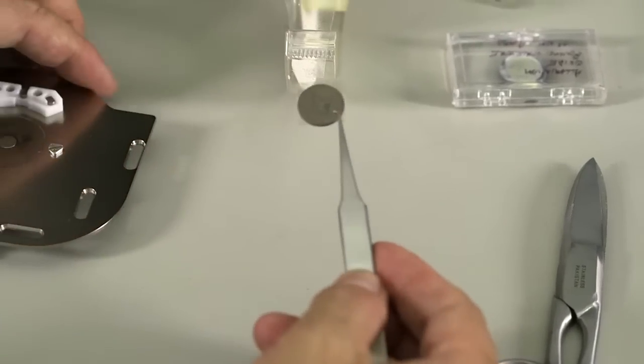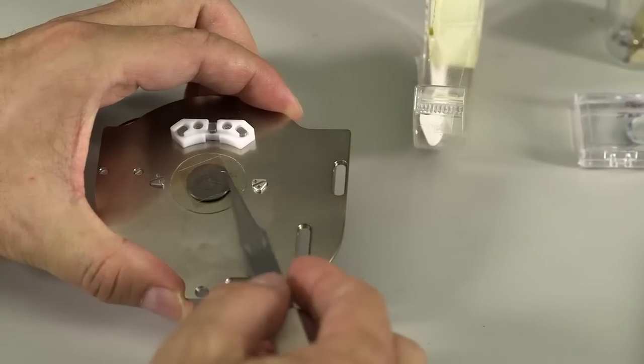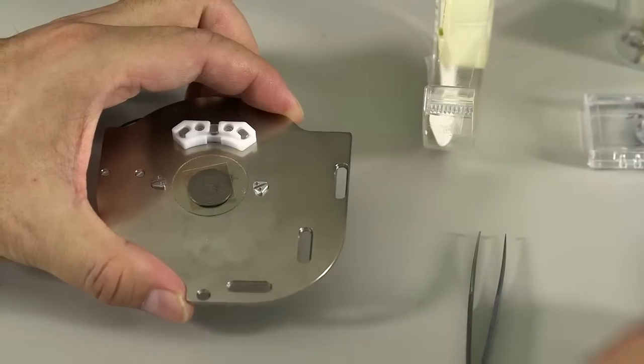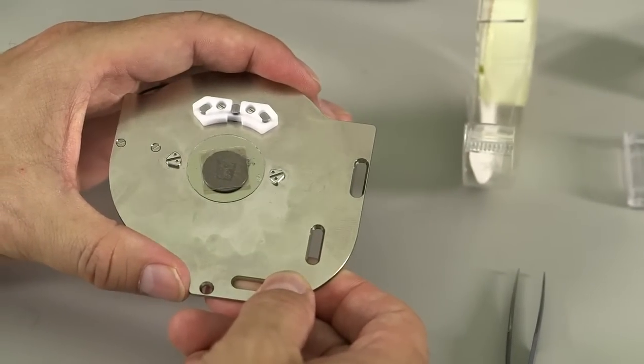Then you can pick up the steel dish with sample on it and drop on top of the sample plate. Now your sample is on the plate and ready for the next operation.